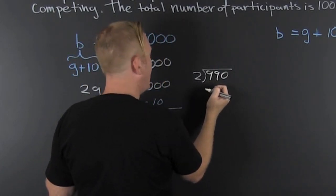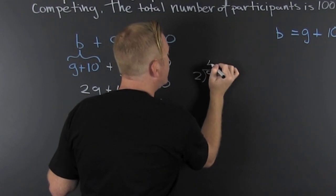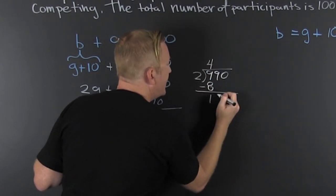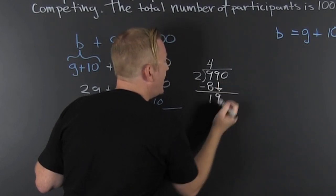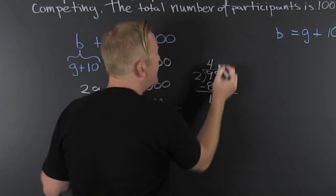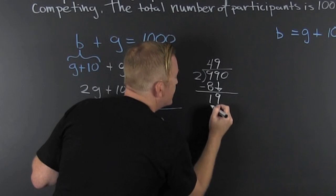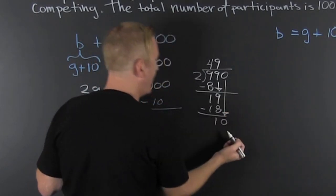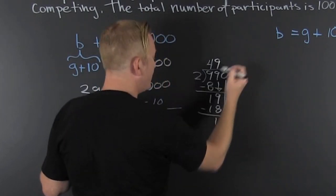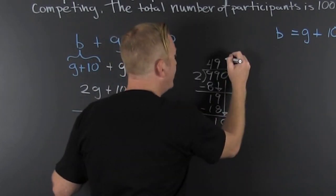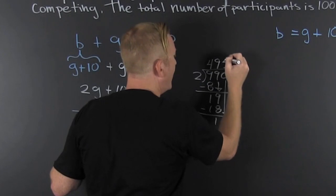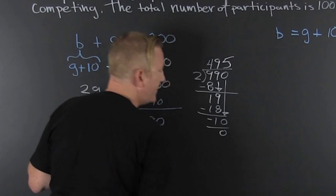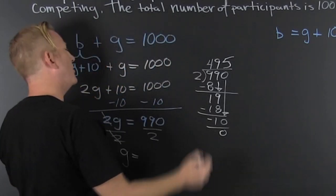It goes in four times — four times two is eight, difference is one, bring down that nine. That's 19 — wait, that's 18 — difference is one, bring down that ten. Two goes in five times because two times five is ten, difference is nothing. No remainder.